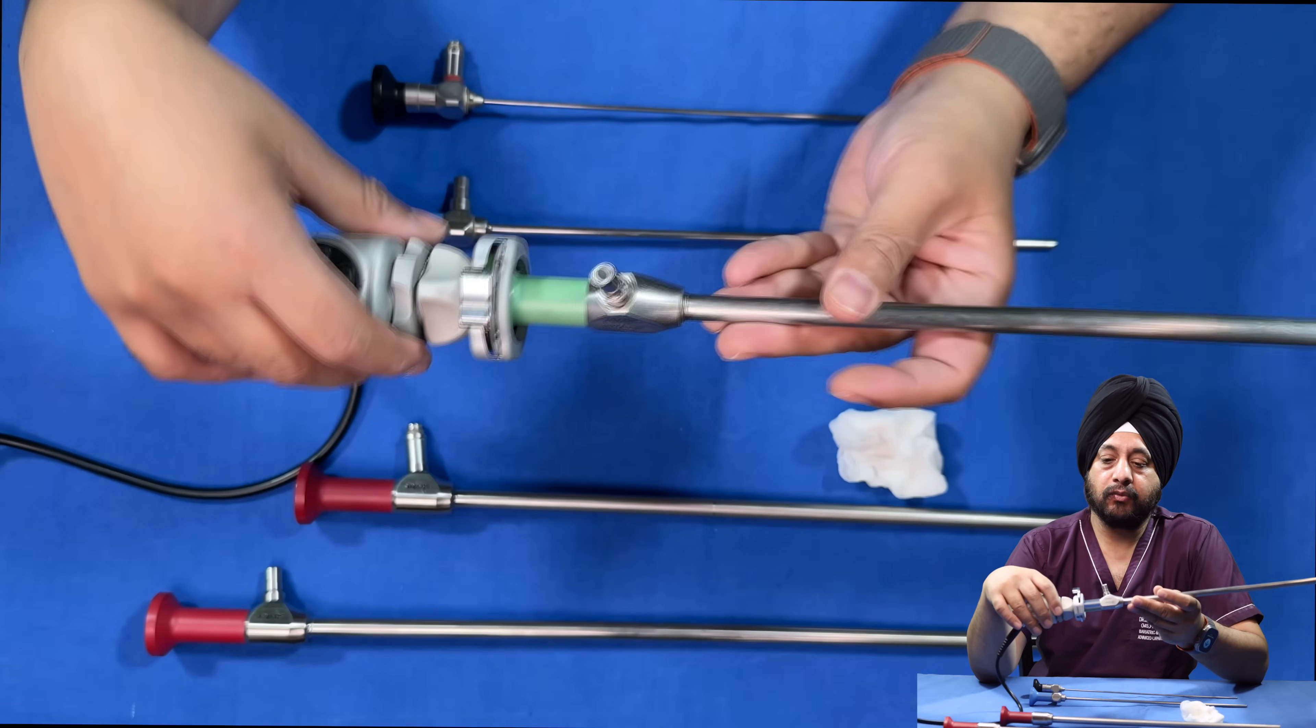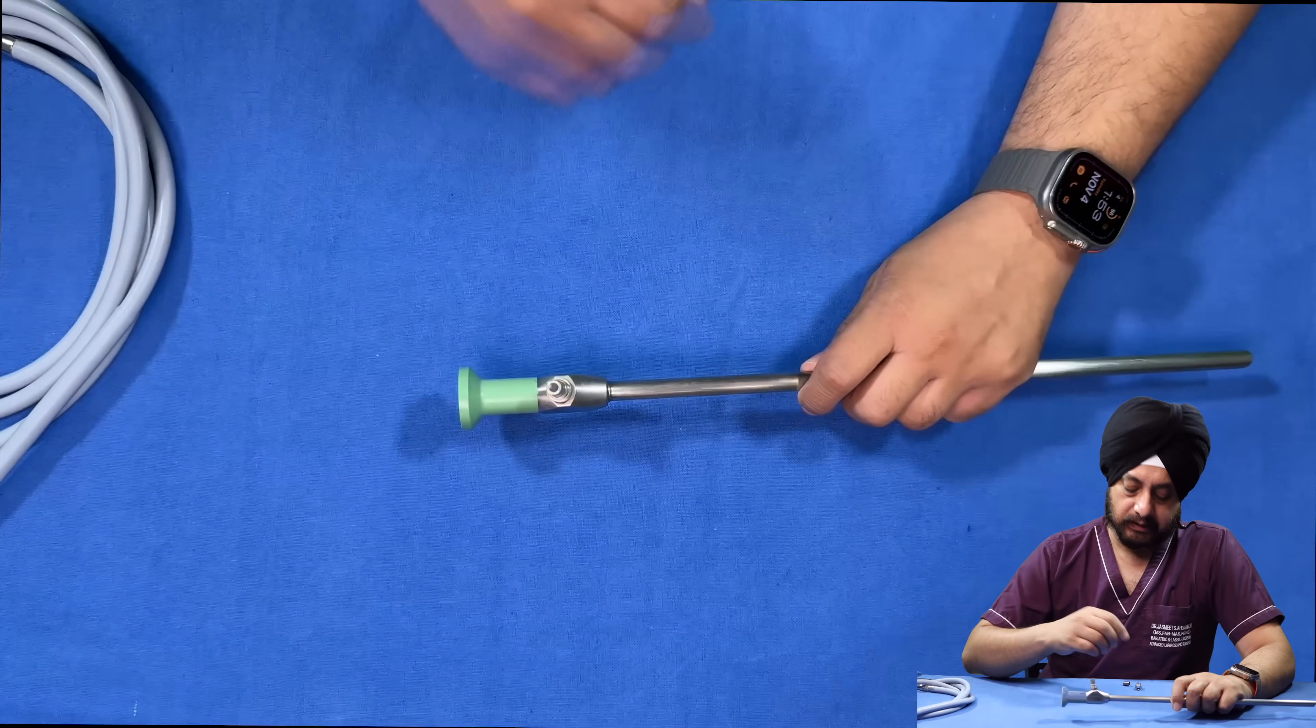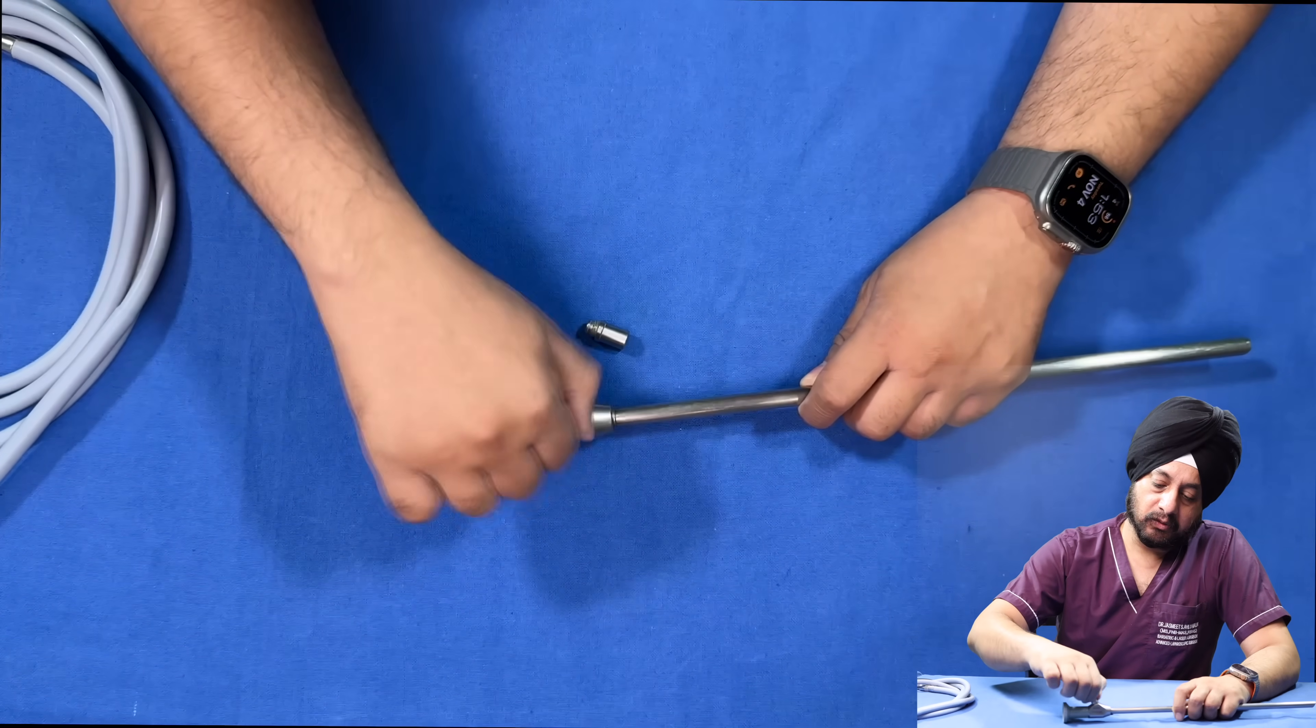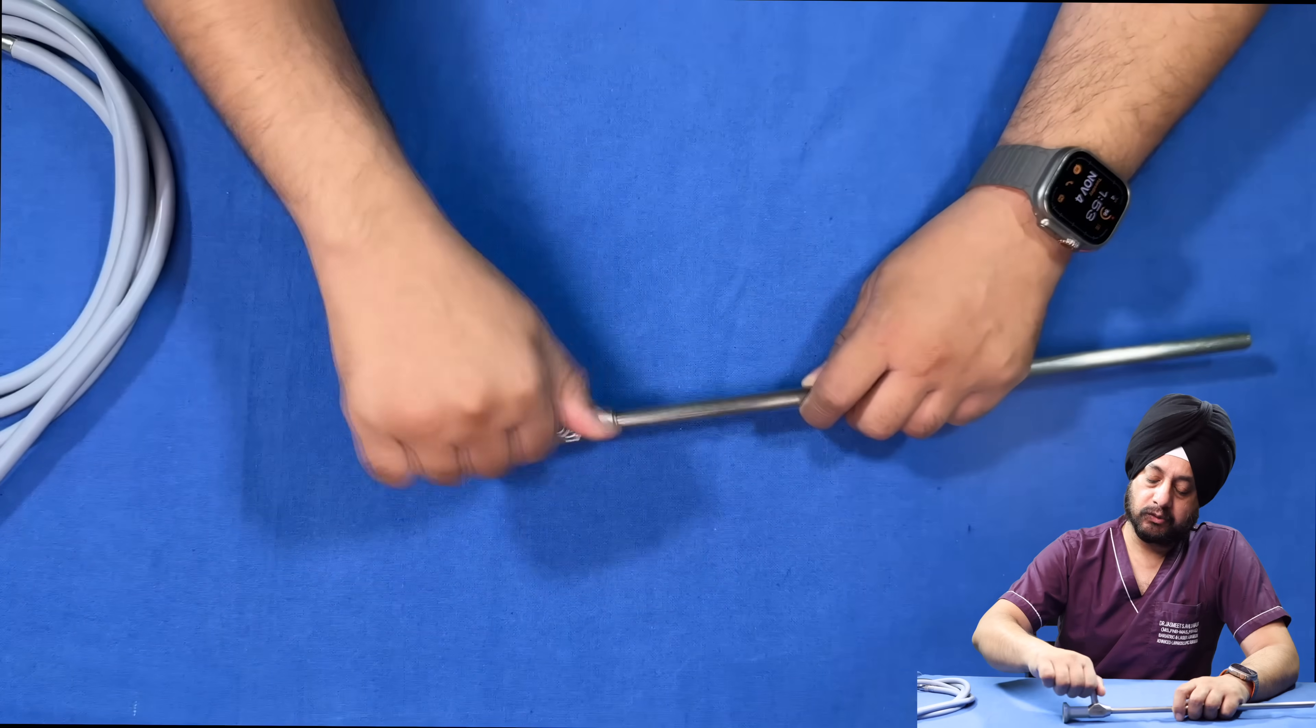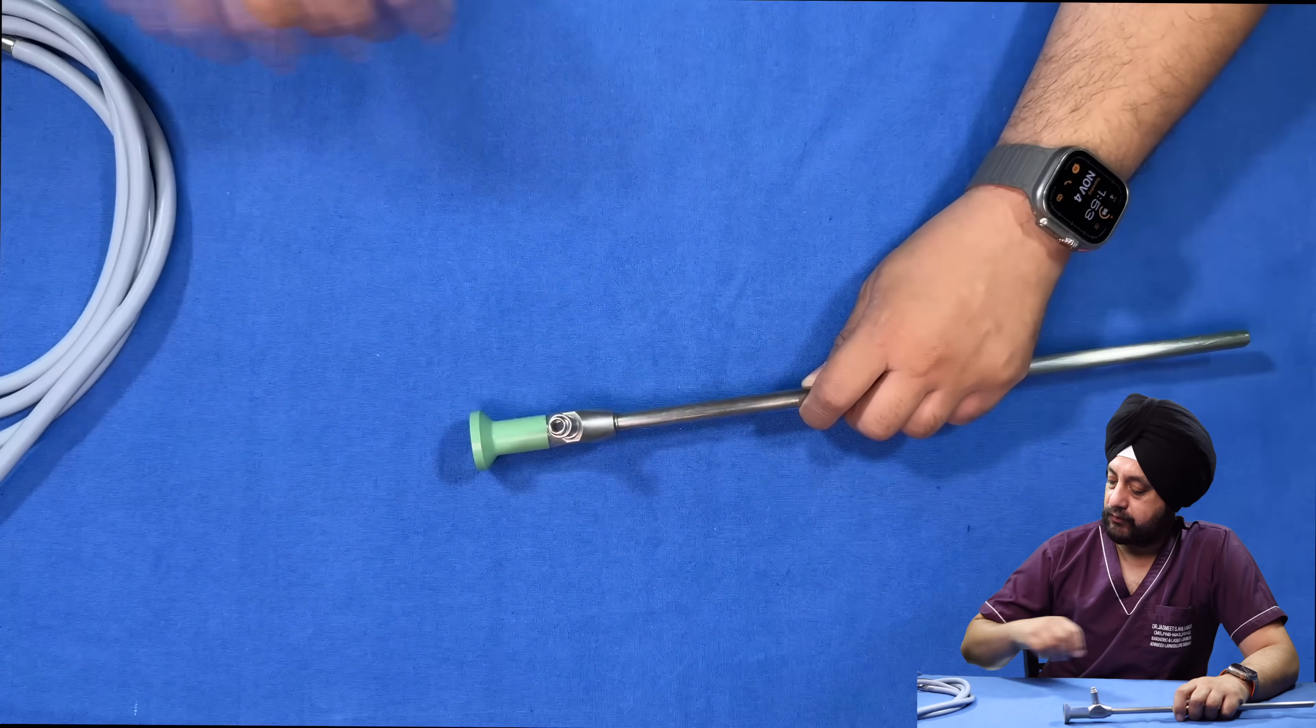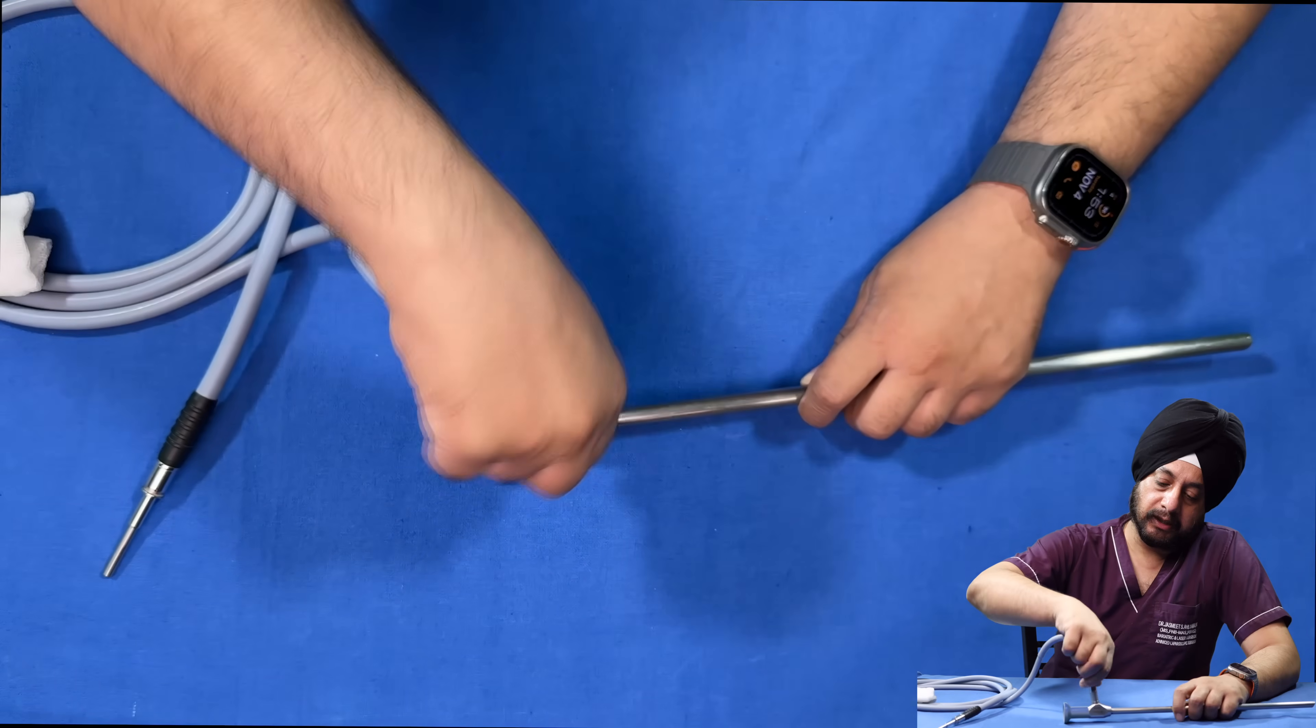This is the connector for connecting the light cable. Most scopes will have at least two adapters. This one attaches over here, and the next one gets screwed over that. This is to connect different kinds of light cables.